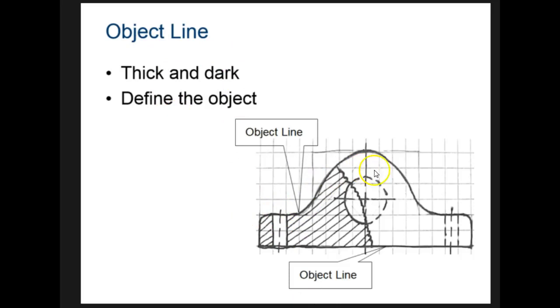Object lines are the outlines of your shape. They're thick and dark. Usually the best practice is to start off by drawing them lightly and then once you're sure you've got them in the right place, come back and darken them up. One of the biggest mistakes I see students make when they start sketching is that they draw way too dark early on in the project and then it's hard to erase when they mess up.